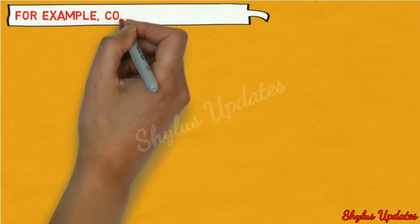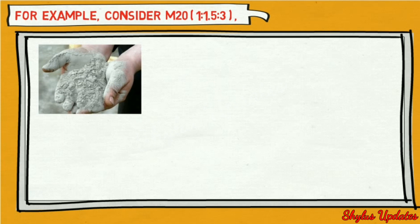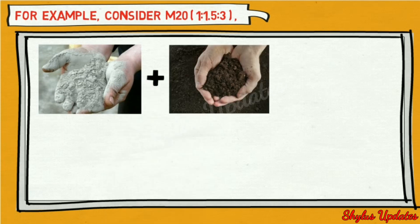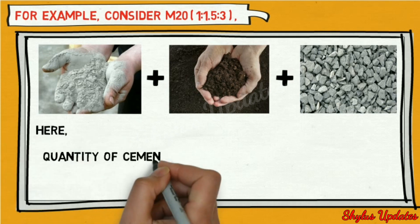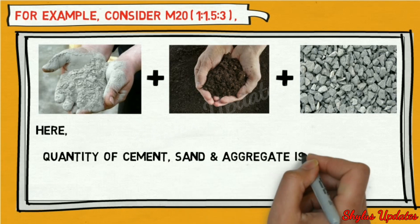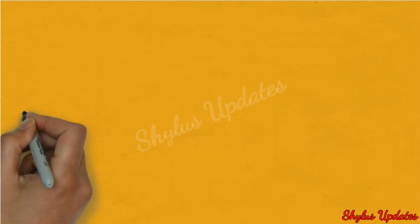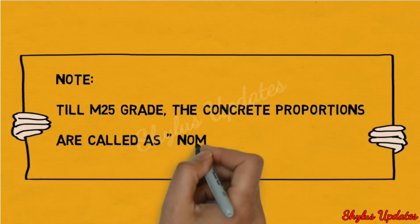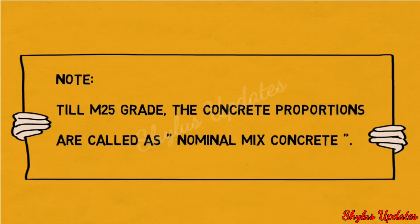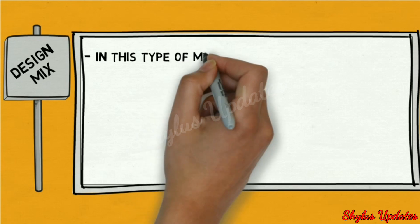For example, consider M20, that is 1:1.5:3 — cement plus sand plus coarse aggregate. Here the quantity of cement, sand, and aggregate is batched in volume as per the fixed ratio 1:1.5:3. Note: up to M25 grade, the concrete proportions are called nominal mix concrete.